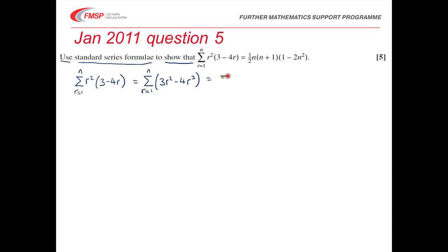And splitting that into separate sums, it's the sum from r equals 1 to n of 3 lots of r squared minus 4 lots of the sum from r equals 1 to n of r cubed.